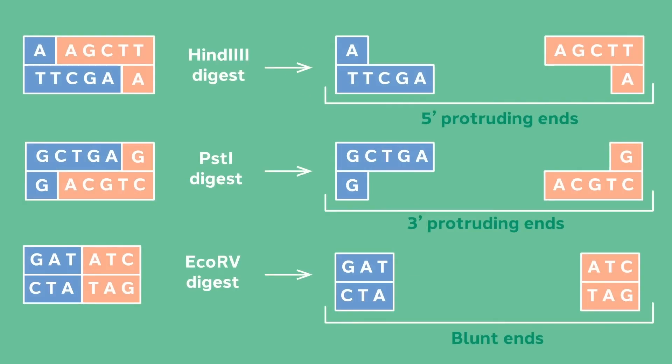In the top example, you can see the five prime protruding end generated by HIN-D3 cleavage. In comparison, PST cuts farther along the three prime strand of its recognition sequence, creating a three prime protruding end after cleavage. A third example is when the enzyme cuts in the middle of the recognition sequence, creating a blunt end.